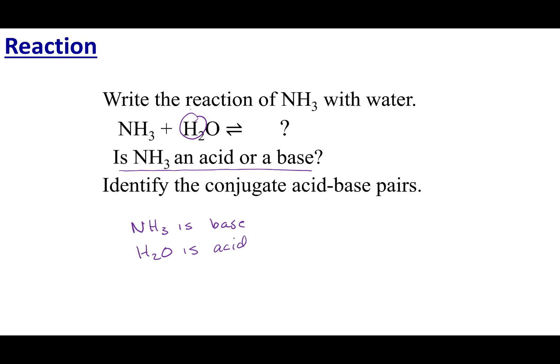So if I take one proton and move it to my NH3, I'll get NH4+, and that means if I remove that proton, I am left with OH-. So now I can do my conjugate acid-base pairs.